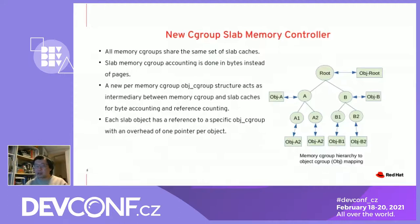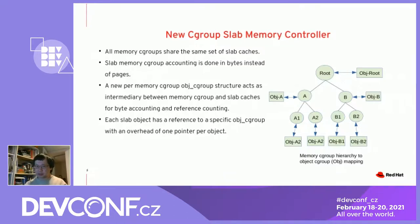Now I'm going to talk about the new cgroup slab memory controller. The major difference between the new controller versus the old one is that all memory cgroups will share the same set of slab caches. So instead of N slab caches for N memory cgroups, we now have a single set of slab caches shared by all memory cgroups. In order to manage the accounting of memory allocated to each cgroup, we now have a new structure that sits between the slab cache and the cgroup. We call that the object-cgroup structure. The purpose of that structure is to do the accounting of memory dedicated to each cgroup.